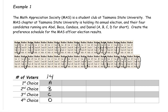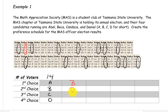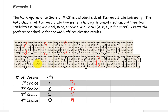Now we'll move on to the next ballot that hasn't been circled yet. The preference is B, D, C, A. So we'll circle all the ballots that have the preference B, D, C, A, and we can see that there is a total of 4 of them.